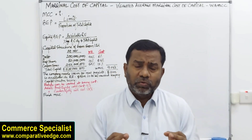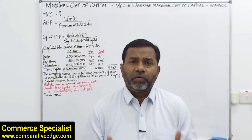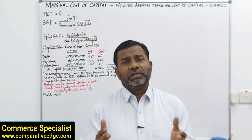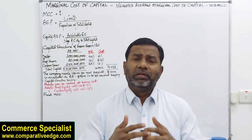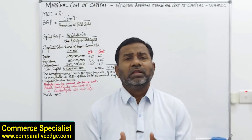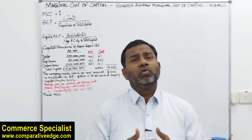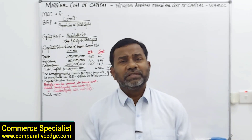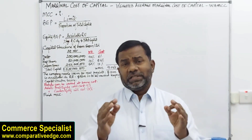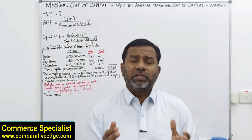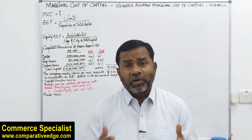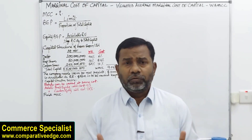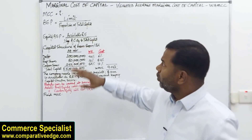One thing everybody needs to understand is that most of the time companies will prefer to use retained earnings to fund future projects. Retained earnings do have some cost, but the cost of using retained earnings is way lower than the cost of additional funds. Whenever you go for additional funds, there are associated flotation costs, brokerage fees, underwriting commissions, and so on. So our basic understanding is: as long as we have some retained earnings balance, our cost of funds will be way lower using retained earnings rather than issuing additional preference or common stock.